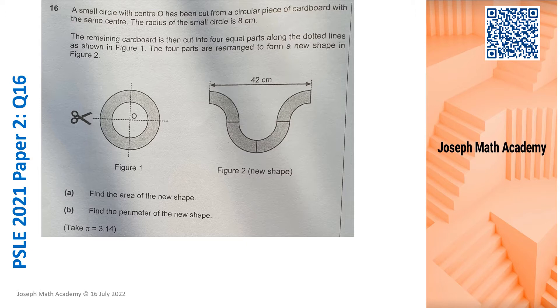Let's read and annotate. We have a small circle with center O. It has been cut from a circular piece of cardboard with the same center. The radius of the small circle is 8cm, I'm going to annotate. Meaning this is 8cm. Now, we are not told the radius of the big circle. So I use small r to represent the small circle. We are not told what is the radius of the big circle which we will be finding very soon.